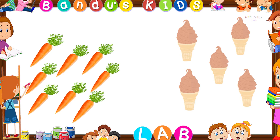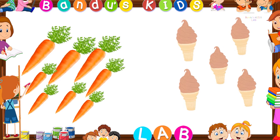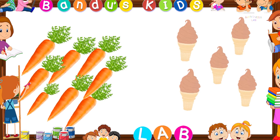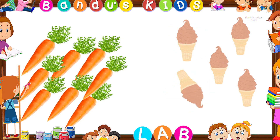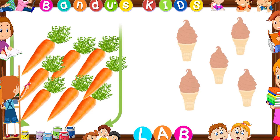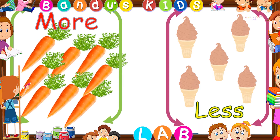Look at this picture. Here are a set of carrots and a set of ice creams. Let's count the carrots first: one, two, three, four, five, six, seven, eight — here are eight carrots. Now let's count the ice creams: one, two, three, four, five — here are five ice creams. The set of carrots is the more one and the set of ice creams is the less one.